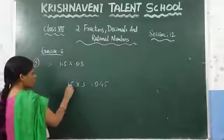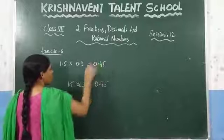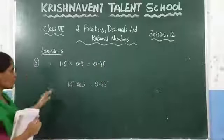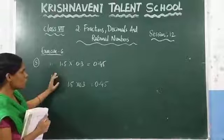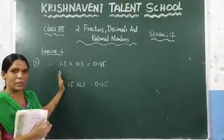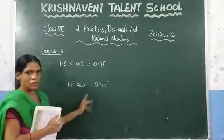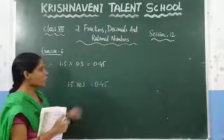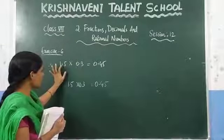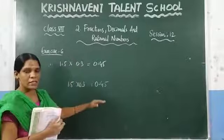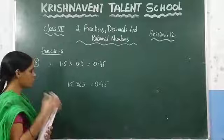Like this you need to find the answer. If you want to find the product of two decimal numbers, just leave the decimal point and write the numbers, take the product of those numbers, and after that count the numbers that appear after the decimal point. Starting from the right, count those many numbers and before that keep the decimal point.